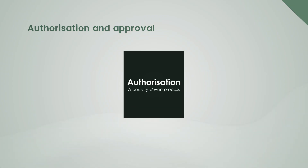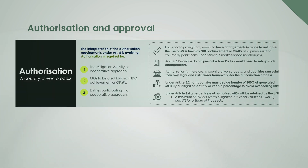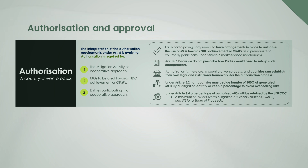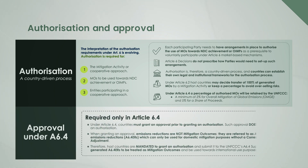Authorization is a country-driven process. Each country needs to have arrangements in place for authorizing the use of mitigation outcomes or Article 6.4 emission reductions. Under Article 6.4, approval is required before authorization, and the UNFCCC retains specific percentages of emission reductions for global mitigation efforts.